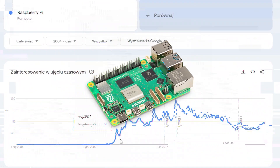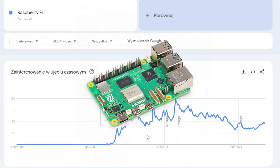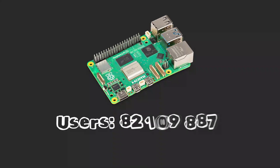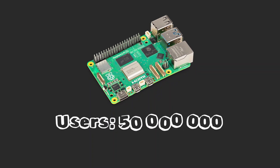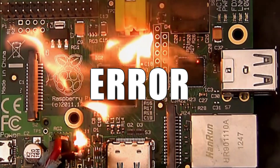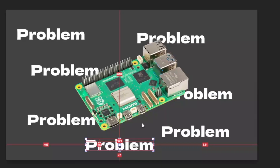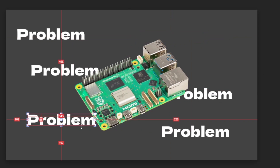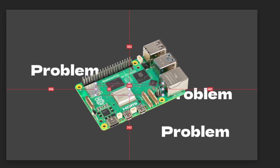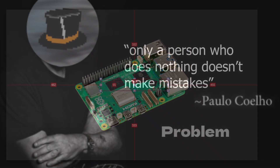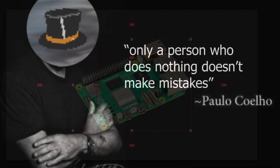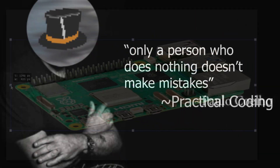Raspberry Pi is currently the most popular microcomputer in the world. Its users are constantly growing, and problems related to this and any other technology will always exist. In this video we will put them together and explain them, because only a person who does nothing does not make mistakes. Let's start.